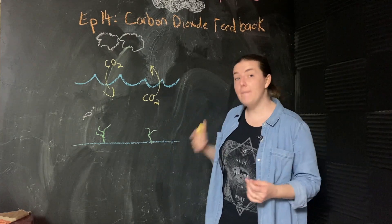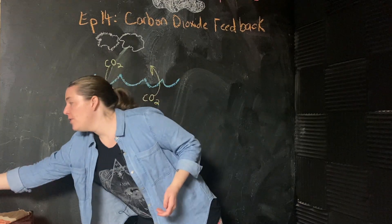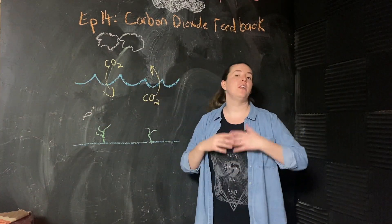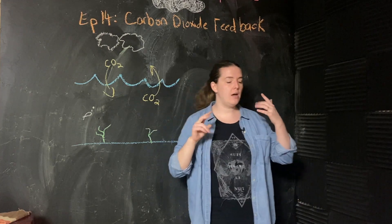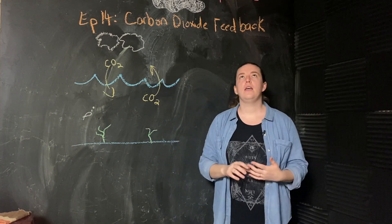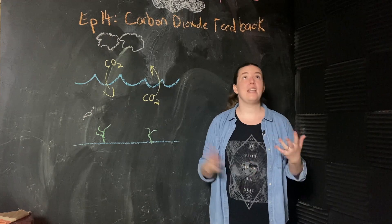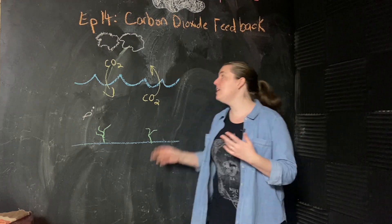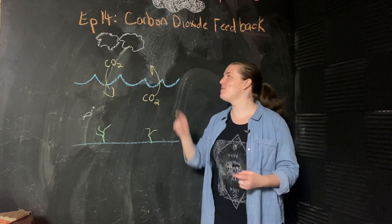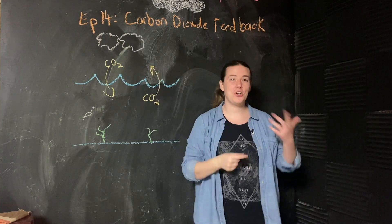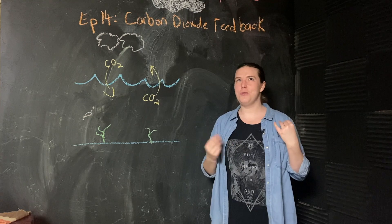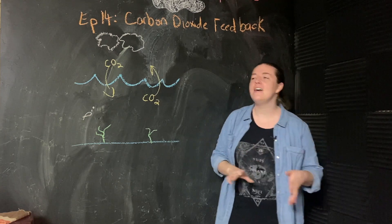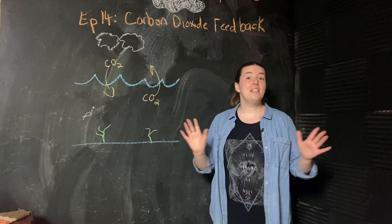Now, how much carbon dioxide the ocean can hold is a function of a lot of things. So it depends on ocean temperature, the ocean pH, atmospheric pressure, even how strong surface winds are. If the winds blowing over the surface of the ocean are really strong, you get more mixing between the atmosphere and ocean, so you can dissolve more CO2 in.